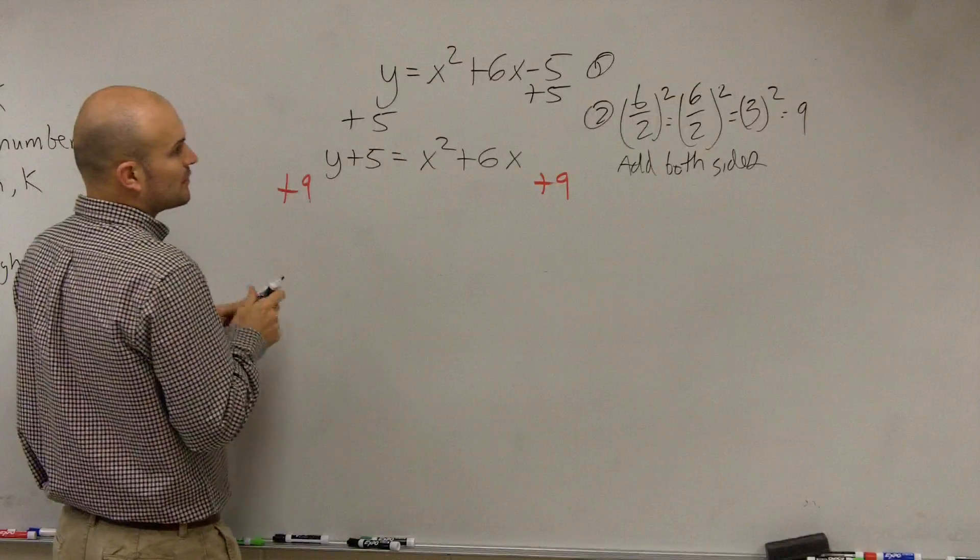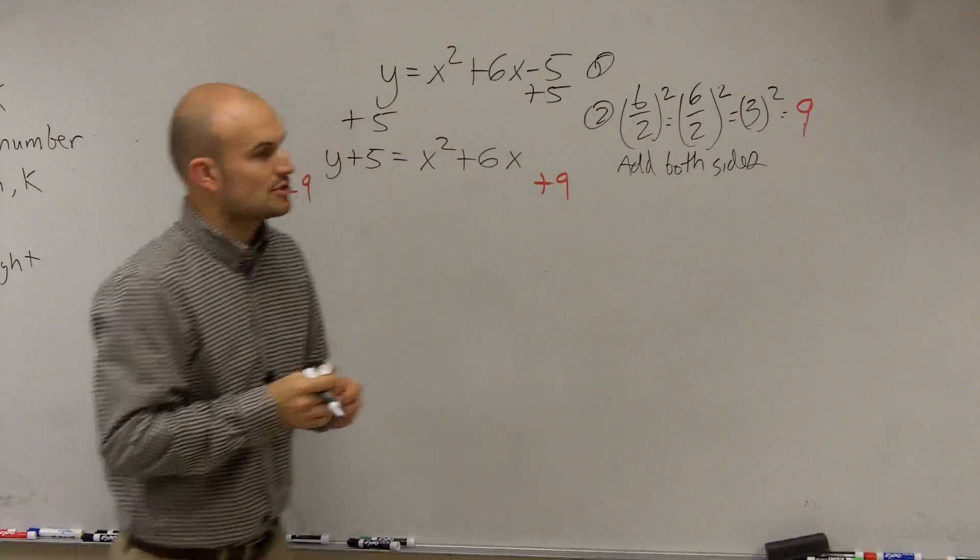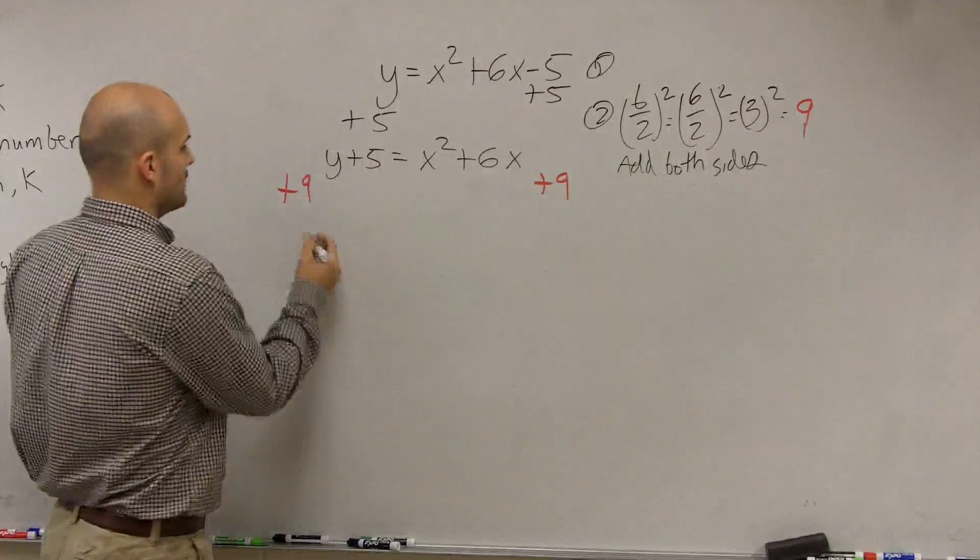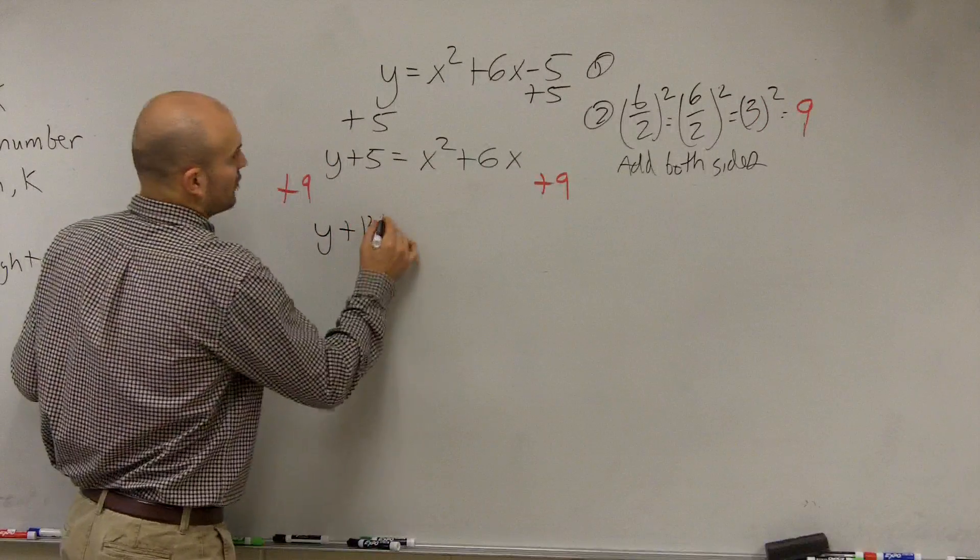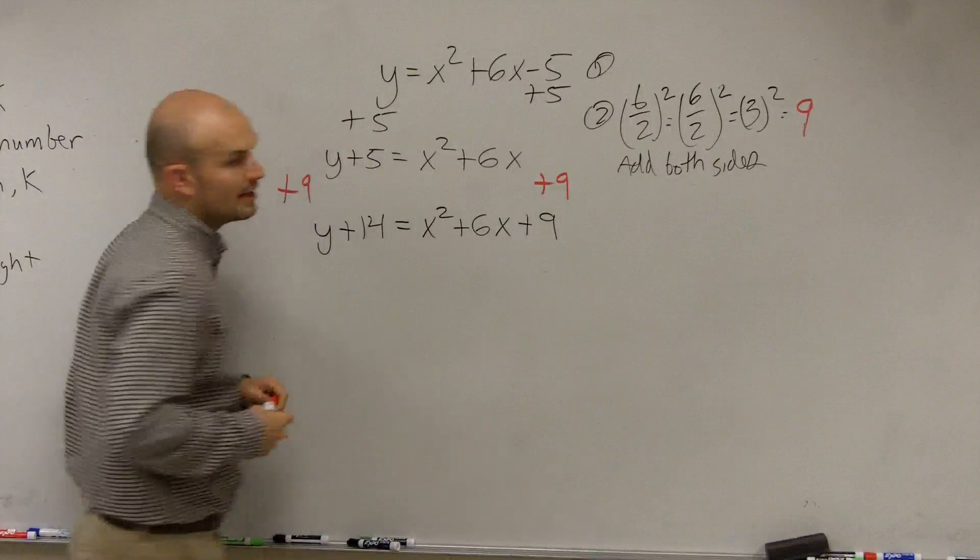So therefore, now what I'm going to have, and let's make this a red 9, just so you guys can follow me a little bit. So I'm going to take that 9 that I figured out, and I'm going to add it to both sides. So therefore, I have y plus 14 equals x squared plus 6x plus 9, all right?